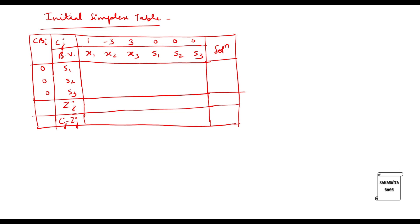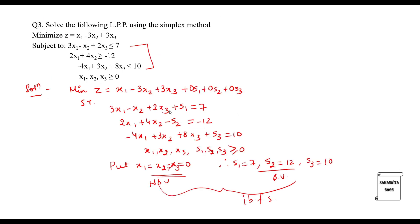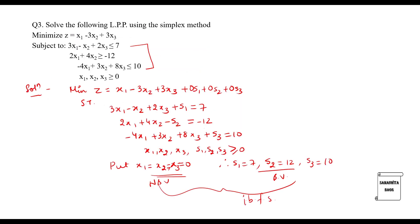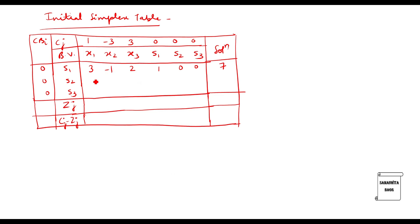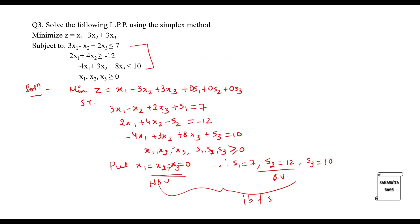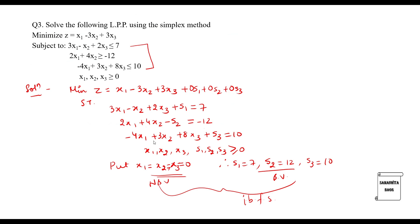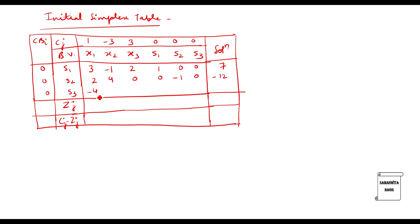I fill in the constraint coefficients. For the first row: 3, minus 1, 2, then 1, 0, 0 with solution value 7. For the second row: 2, 4, minus 1, then 0, minus 1, 0 — note this side is minus 12, be careful. For the third row: minus 4, 3, 8, then 0, 0, 1 with solution value 10. Since all cBj values are 0, all zj values will be 0.